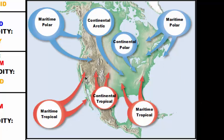Where an air mass forms influences its temperature. It also affects humidity content. If they form over the ocean they're going to be more humid because there's much more evaporation coming from the ocean, leading to a lot more water vapor in the air. If they form over the continent or land there's obviously less evaporation going on, so there's going to be less water getting into the air, thus a drier air mass.